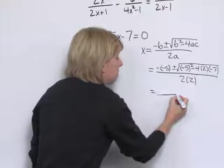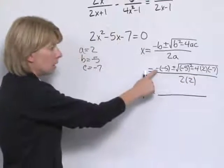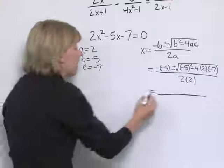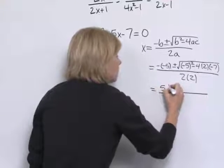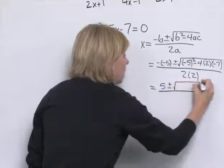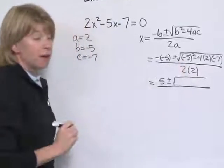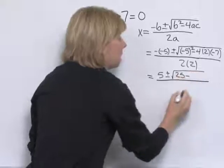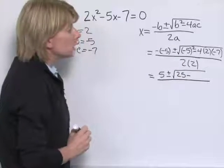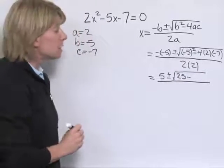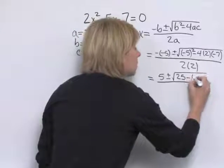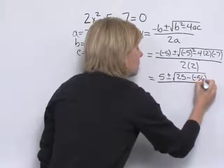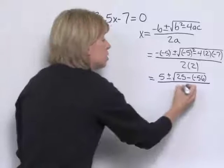Let's go through and simplify this. This is really a positive 5. And under the radical, we've got negative 5 squared is 25, minus 4 times 2 is 8, times negative 7 is negative 56, all over 2 times 2 or 4.